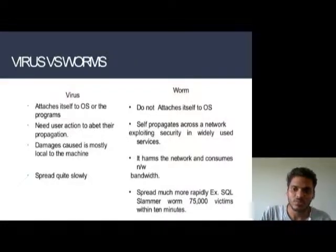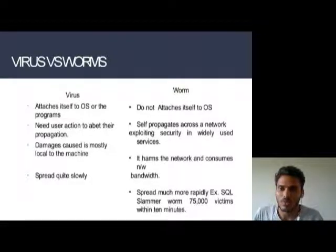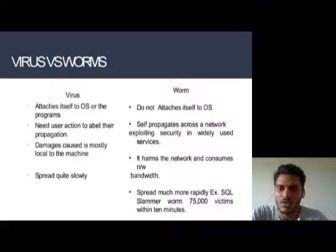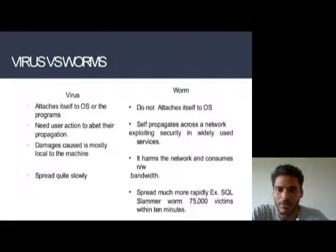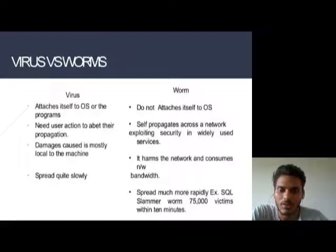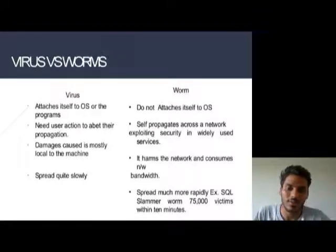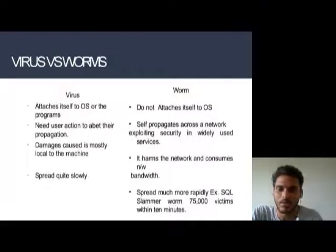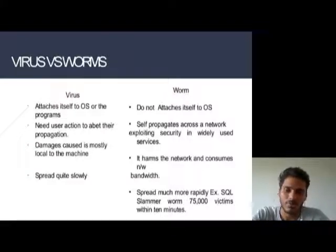Next, virus vs worm. A virus attaches itself to the OS (operating system) or a program, and needs user action to propagate. Its damage cost is mostly local to the machine and it spreads relatively slowly. Worms, by contrast, do not attach to the OS — they are self-propagating across a network, exploiting security holes in widely used services. Worms harm the network, consume bandwidth, and spread much more rapidly. For example, SQL Slammer infected 75,000 victims within just 10 minutes.